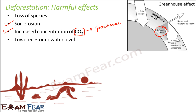Another effect is lowered groundwater level. In a forested area, water seeps through the soil easily. But when forests are converted into factories, the cemented floor prevents water from passing through, so groundwater is no longer replenished by rainfall. The forest ecosystem is also destroyed — animals, insects, and birds all lose their habitat and food sources, disturbing the entire ecosystem.